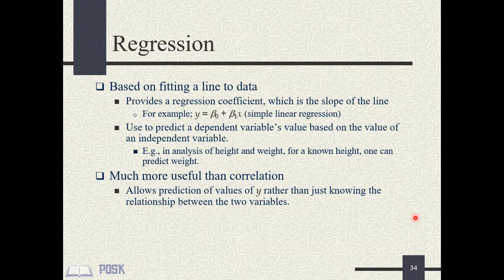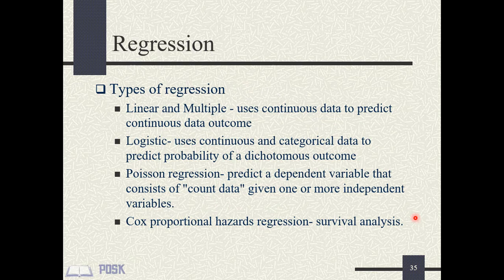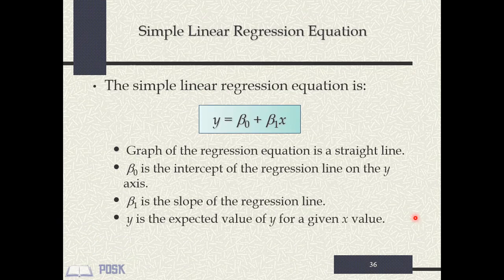Regressions are a group of advanced statistical techniques based on fitting a regression line to the data, governed by the regression equation. There are different types. Linear regression uses continuous data to predict a continuous outcome, while logistic regression uses continuous and categorical data to predict the probability of a dichotomous outcome. The linear regression equation has a dependent variable (Y), predictor variable (B1), and beta 0 as the intercept of the regression line — the point where the line crosses the Y-axis.